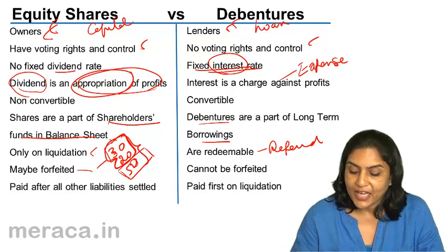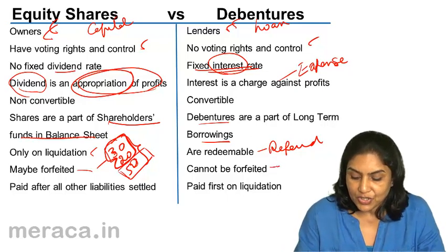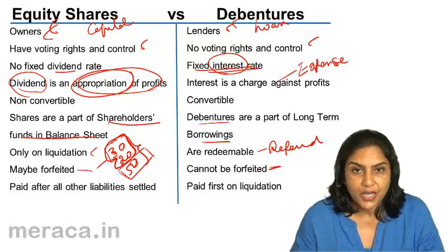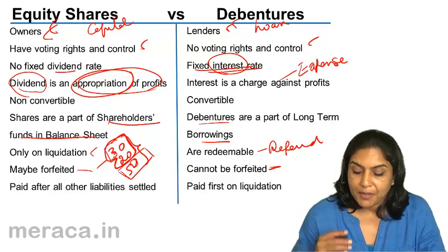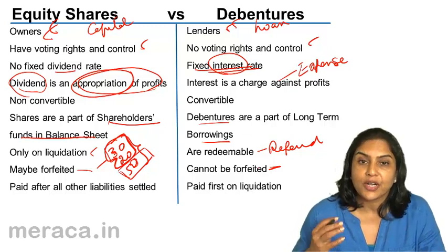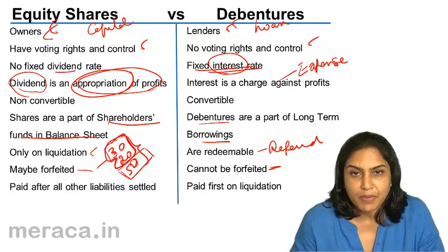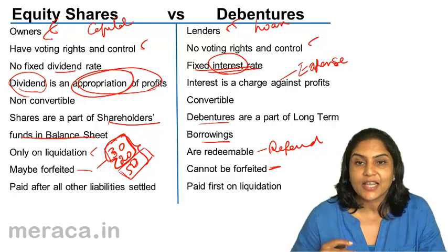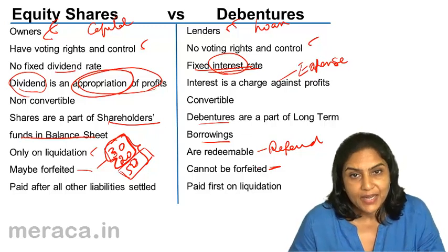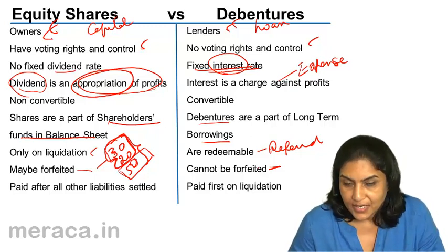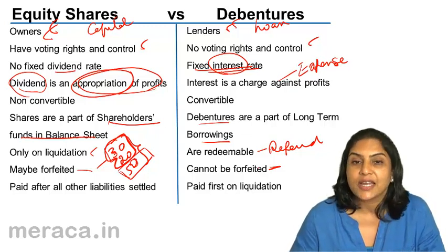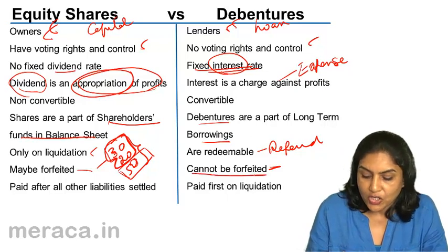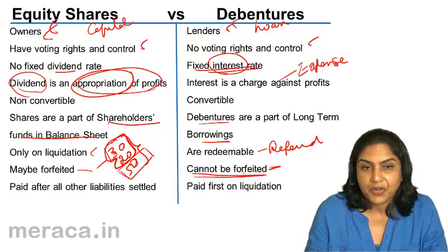But in case of debentures, debenture holders are not owners of the company. Debenture holders have lent money to the company, and on the money which is lent, they have to be paid interest. Debentures cannot be forfeited.